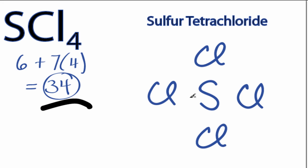We have a total of 34 valence electrons. We'll put a pair between the sulfur and the chlorines to form chemical bonds. We've used 8.